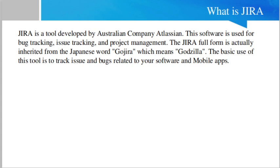Jira is developed by the Australian company Atlassian. This software is used for bug tracking, issue tracking, and project management. The name Jira is inherited from the Japanese word 'Gojira,' which means Godzilla. The basic use of this tool is to track issues and bugs related to your software and mobile applications.